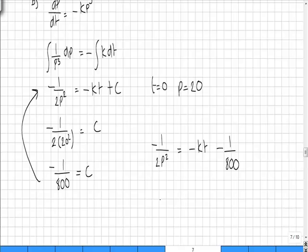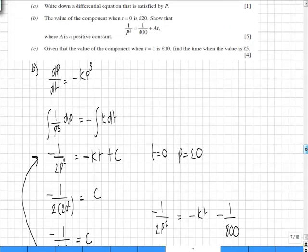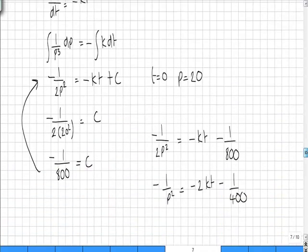In the first instance we can multiply through by 2 and that will give us minus 1 over p squared is equal to minus 2kt minus 1 over 400. As you can see that matches the equation that we're asked to find here.